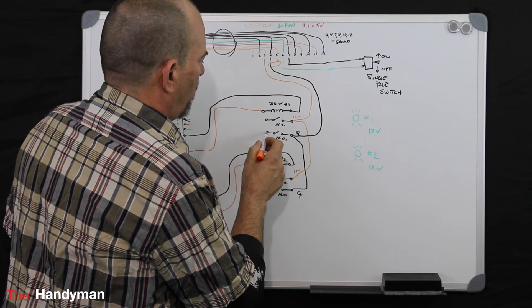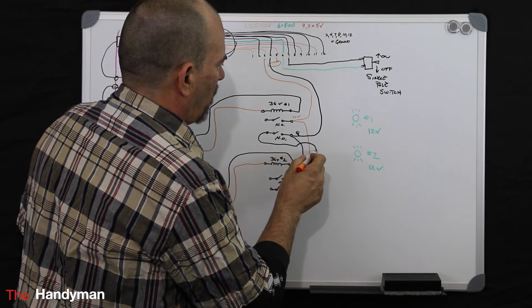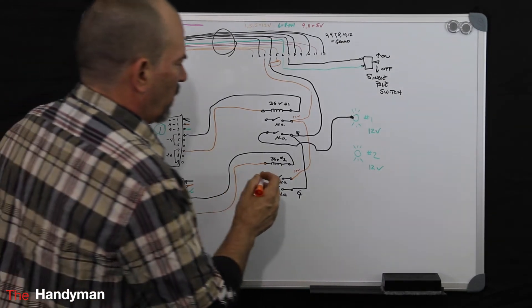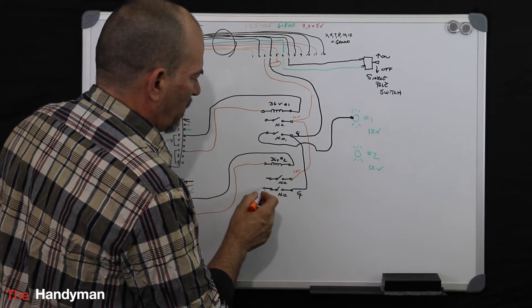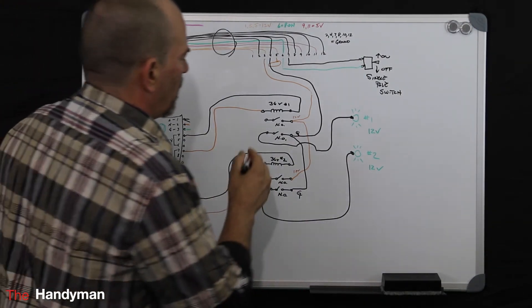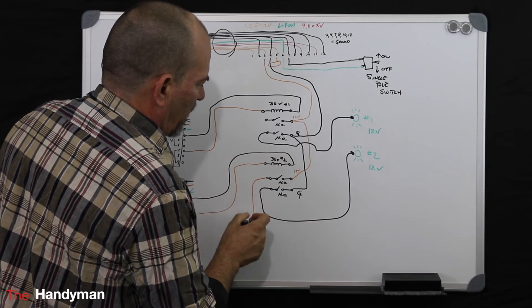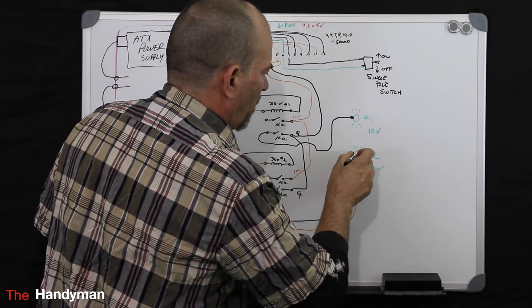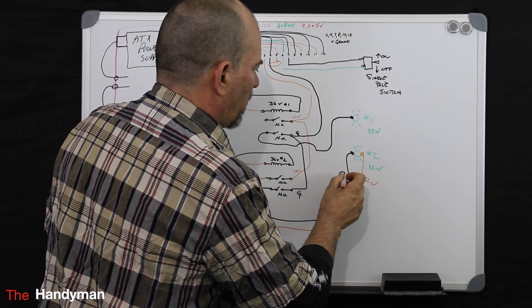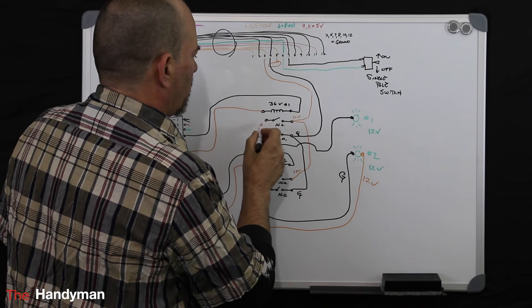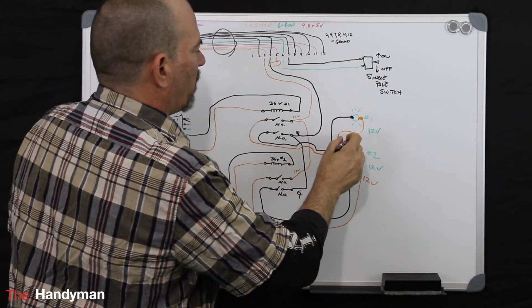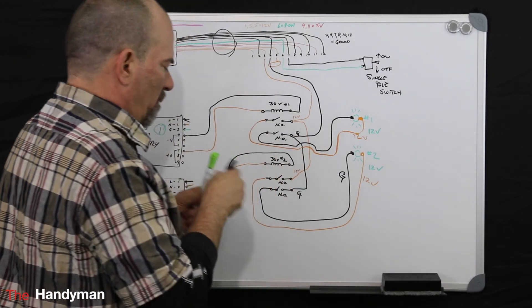So for the first one, you're going to come off the other side of your normally open. You're going to go to one terminal on your light. You're going to do the same here. Come off one side of your normally open, your ground. You're going to go to your light. And then the same with your positives. You'll go to the other side of your light. So you have 12 volts on that side and your ground here. So the same thing here. Come around and you have your 12 volts feeding your light and your ground.